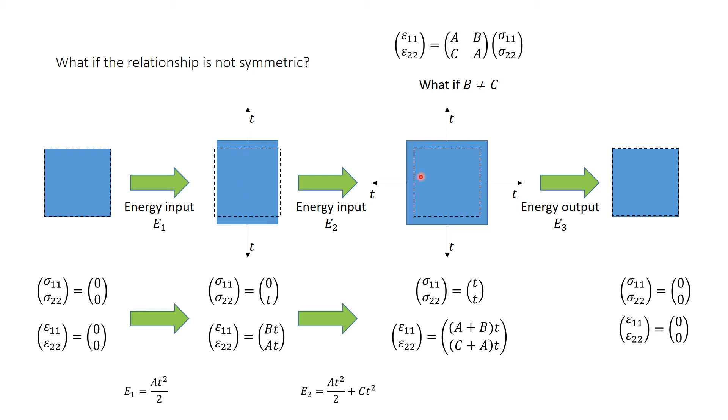Going from stage 2 to stage 3, we notice that sigma1 changes from 0 to t, epsilon1 changes from bt to a plus b multiplied by t. Sigma2 is held constant at t, while epsilon2 changes from at to c plus a multiplied by t. When we apply the previous equations to both pairs of stresses and strains, we get an energy input of at squared over 2 plus ct squared.